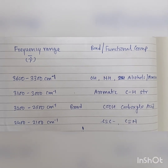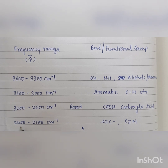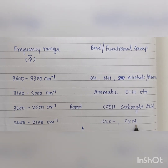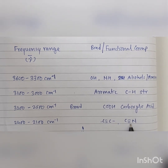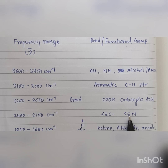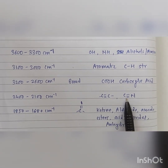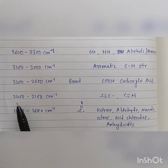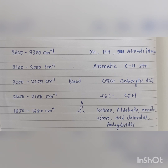The next important IR region is 2400 to 2100 centimeter inverse. It is called the triple bond region — C≡C stretch and C≡N stretch. These signals are obtained in this frequency range of 2400 to 2100 centimeter inverse.